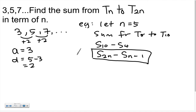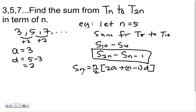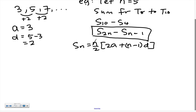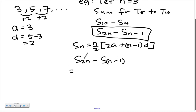The formula for the sum of n terms of an AP is: Sₙ = n/2 × (2a + (n−1)d). Now applying this to S₂ₙ − Sₙ₋₁: for S₂ₙ, I replace n with 2n, giving (2n/2)(2×3 + (2n−1)×2).